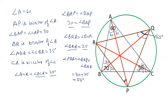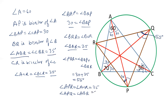Angle APR is equal to angle ACR, which we already know is 25 degrees. And angle APQ is equal to angle ABQ, which we have calculated as 35 degrees. So angle QPR equals angle APR plus angle APQ, that is 25 plus 35, which equals 60 degrees.